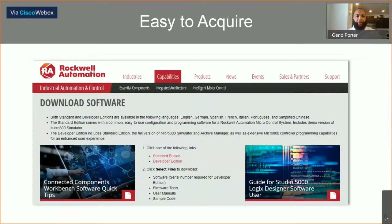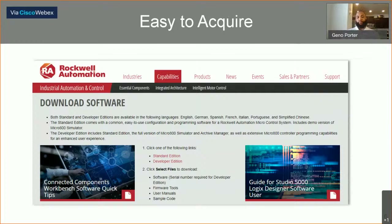How do we download CCW or Connected Components Workbench? A quick thing to do is go to Google and type in CCW download. The more technical approach is to go to PCDC — the Product Configuration Download Center on Rockwell Automation's website — where you can download all your software and firmware for your devices. When you land on that screen, you'll have two options: to download the Standard Edition or the Developer Edition. The software will ask if you want some additional software and tools, and I highly encourage you to download those.